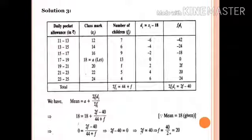By assumed mean method formula, mean equals a plus sigma fi di upon sigma fi. Mean is given as 18. Assumed mean is also 18. So 18 equals 18 plus 2f minus 40 upon 44 plus f. 18 minus 18 equals 0. Taking denominator in cross multiplication, 0 into 44 plus f equals 0. So 2f minus 40 equals 0. 2f equals 40. f equals 40 upon 2, that is 20. So frequency by assumed mean method is 20.